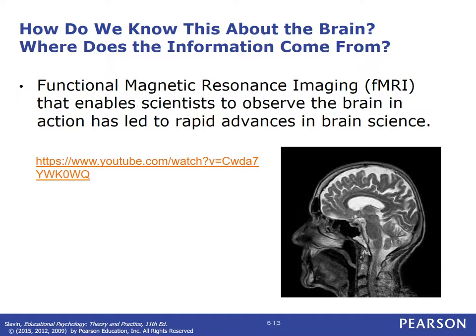For example, if you take a participant and put them in an fMRI machine — which doesn't hurt, just like a CAT scan or MRI doesn't hurt — and show them pictures of things that are shocking or scary, you can actually see what pathways light up in the brain. Scientists can understand what parts of the brain deal with anger, hostility, violence, love, and all these different emotions, understanding much more about what's going on inside the brain.